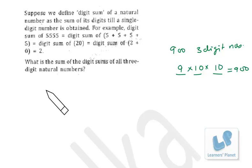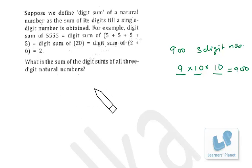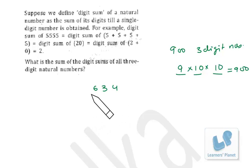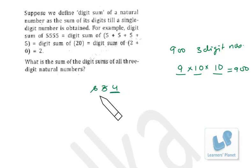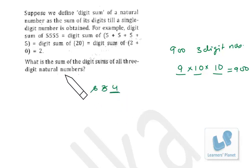For example, the digit sum of 634: 6+3 = 9, 9+4 = 13, and 13 divided by 9 leaves a remainder of 4. So the digital sum is also 4 — you can exclude 9 and the remaining digit is 4. That is nothing but the digital sum of the three digits, and the same principle will be used to solve this problem.